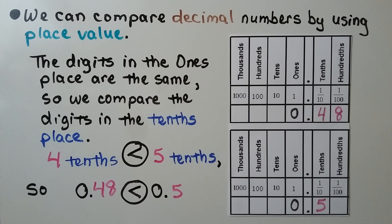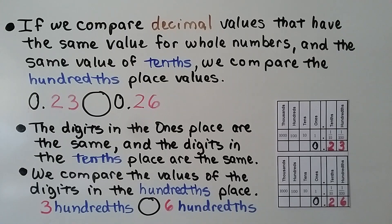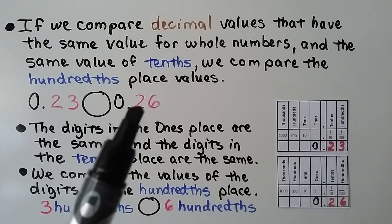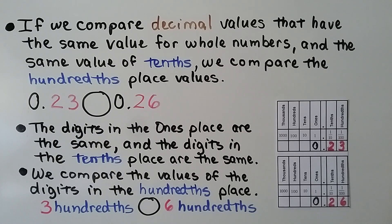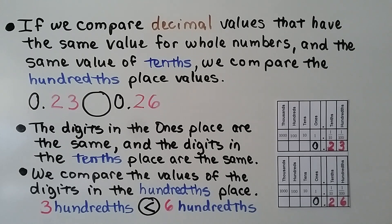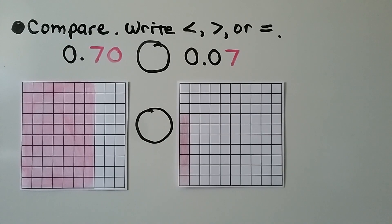If decimal values have the same whole number and the same tenths, we compare their hundredths place values. We need to compare twenty-three hundredths to twenty-six hundredths. The digits in the ones place are the same and the tenths place are the same, so we compare the hundredths place. Three hundredths is less than six hundredths, so twenty-three hundredths is less than twenty-six hundredths.